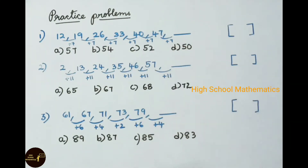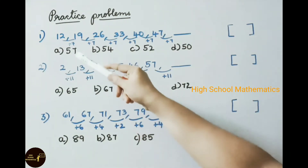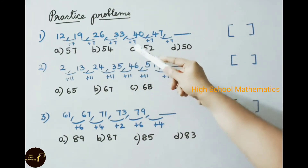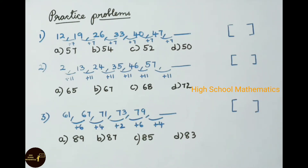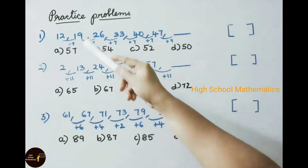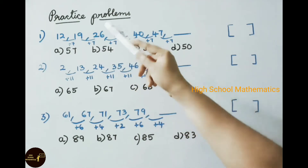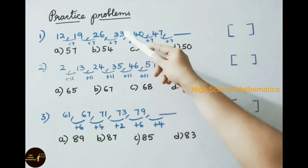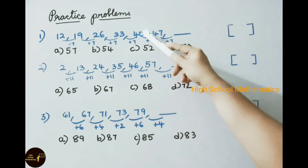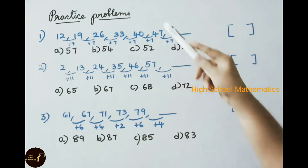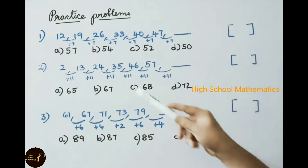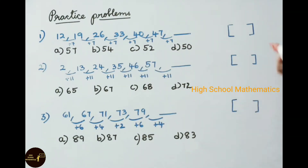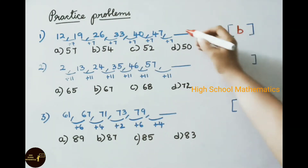Now let us see practice problems. First one: 12, 19, 26, 33, 40, 47 — find the next term. Observe: 12 plus 7 is 19, 19 plus 7 is 26, 26 plus 7 is 33, 33 plus 7 is 40, 40 plus 7 is 47. So the next term is 47 plus 7, which is 54. The answer is option B, 54.